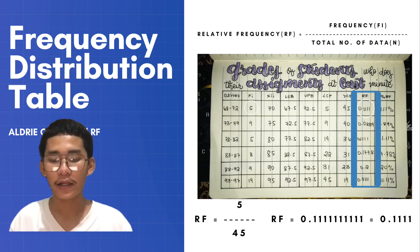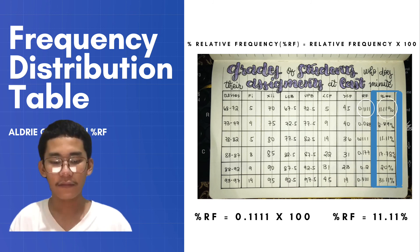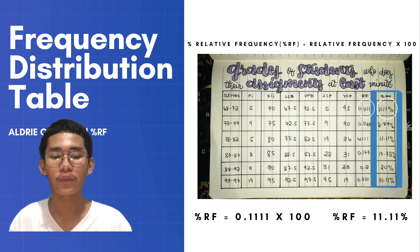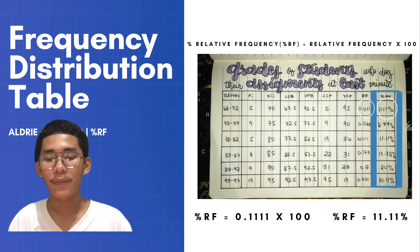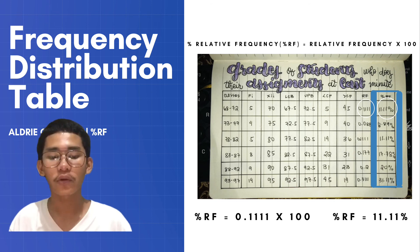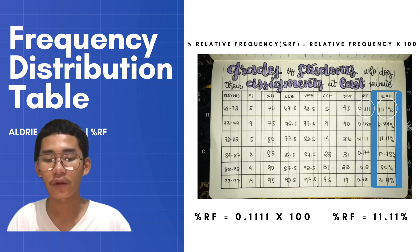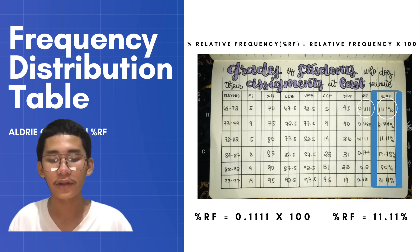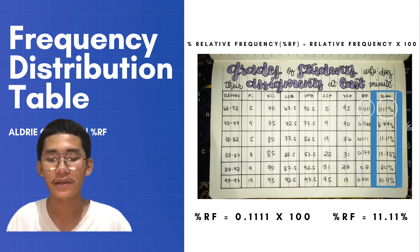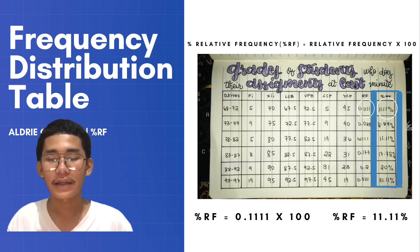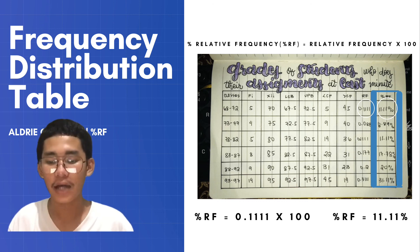In accordance with relative frequency, we can also get the percentage relative frequency. In finding it, we cite the relative frequency we solved earlier and convert it to a percentage. There are two ways to do this: the first way is using a calculator — simply multiply the number by 100 and add the percentage sign. The second way is moving the decimal point two places to the right and adding the percentage sign at the end.